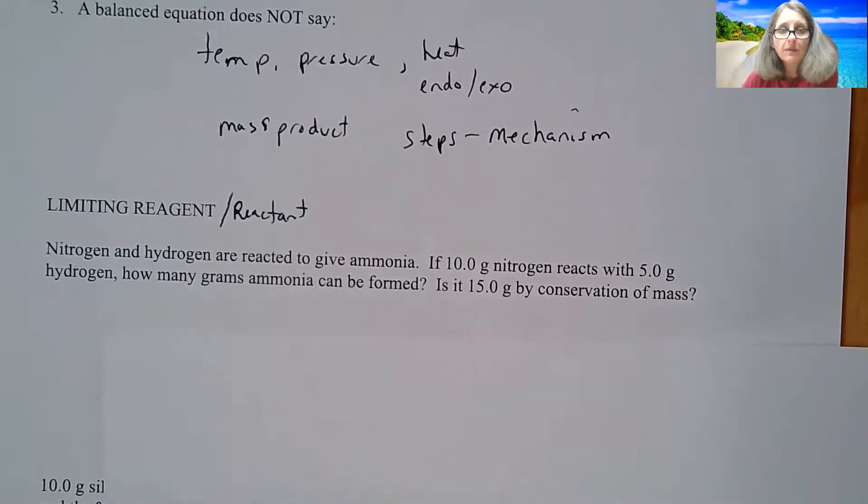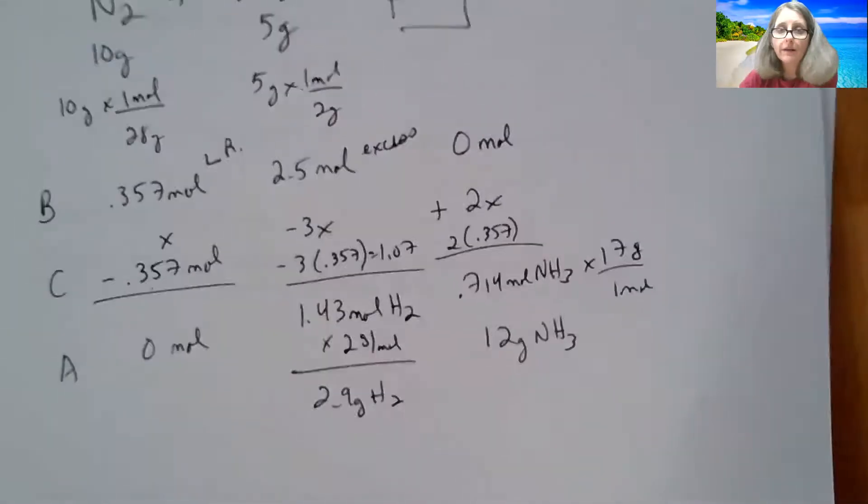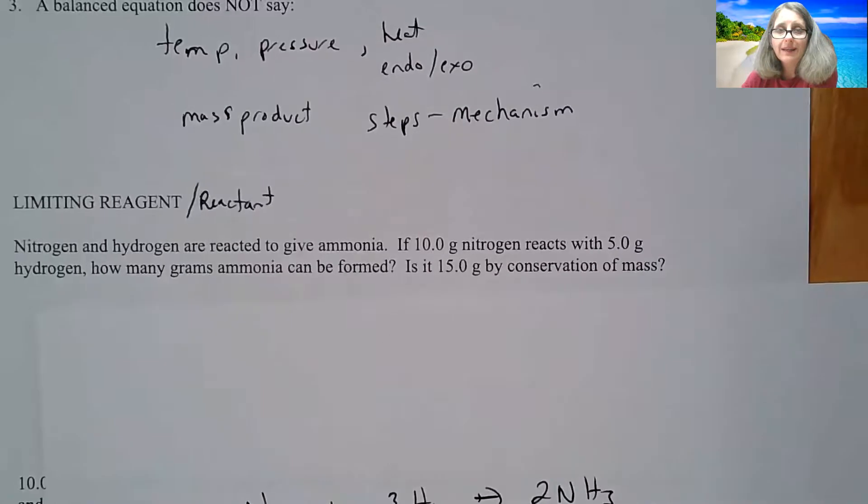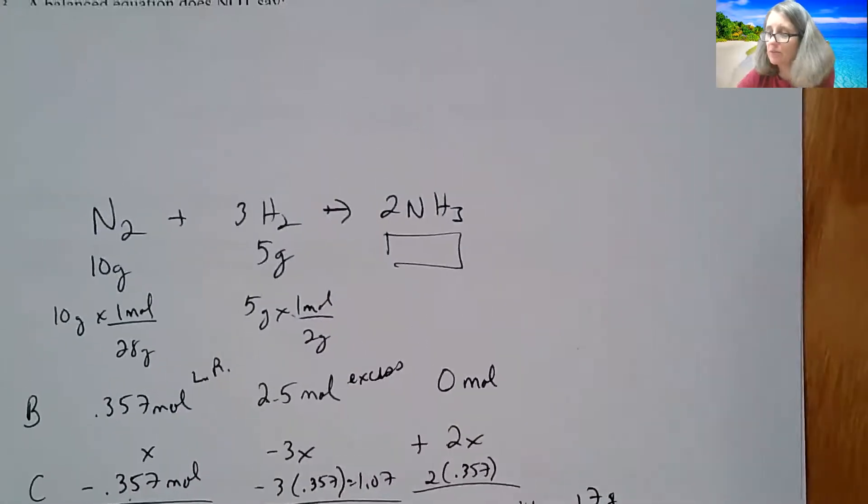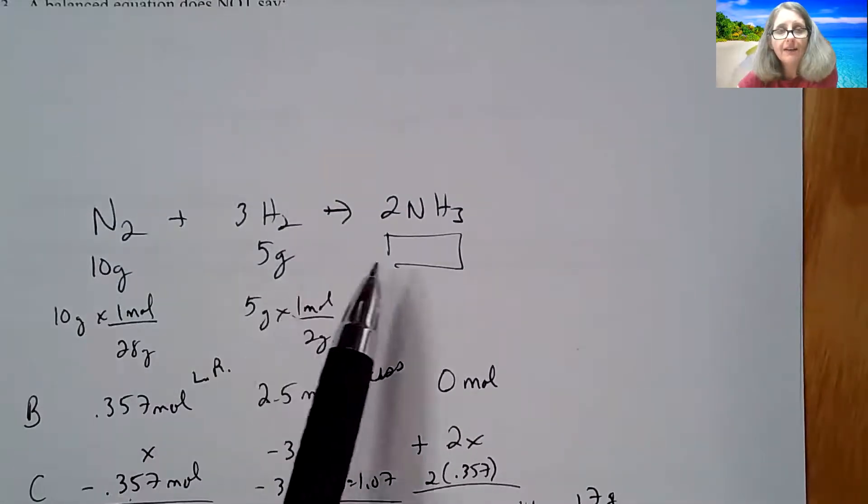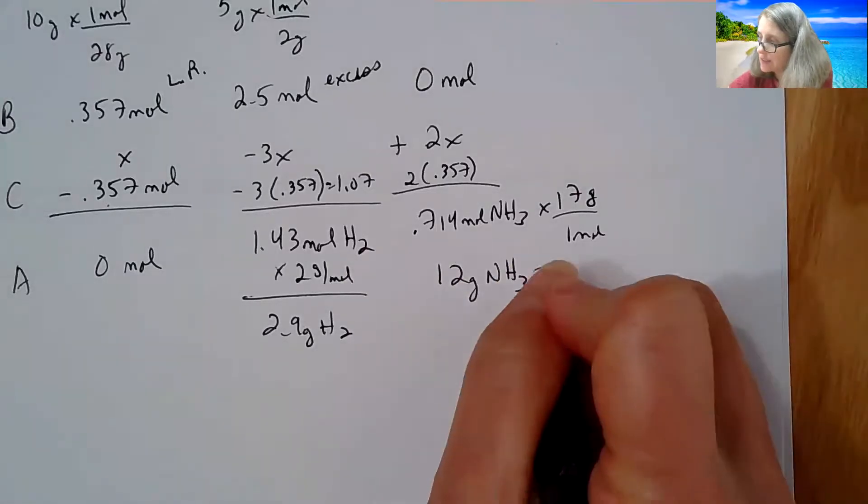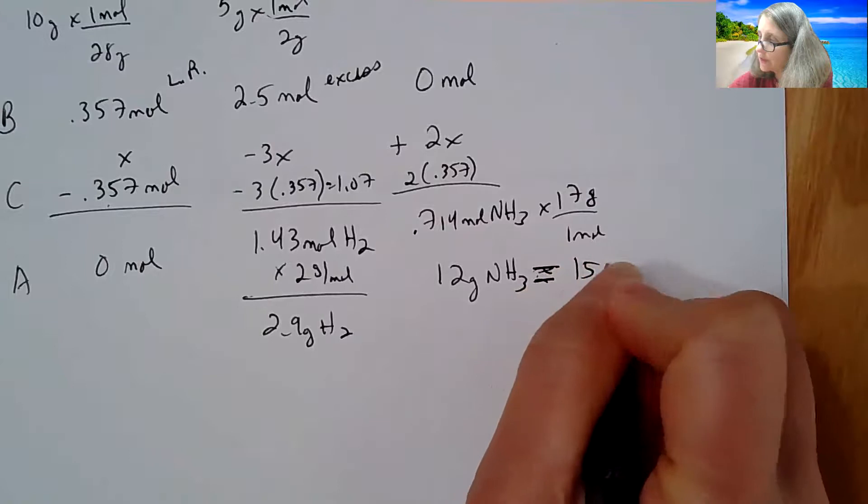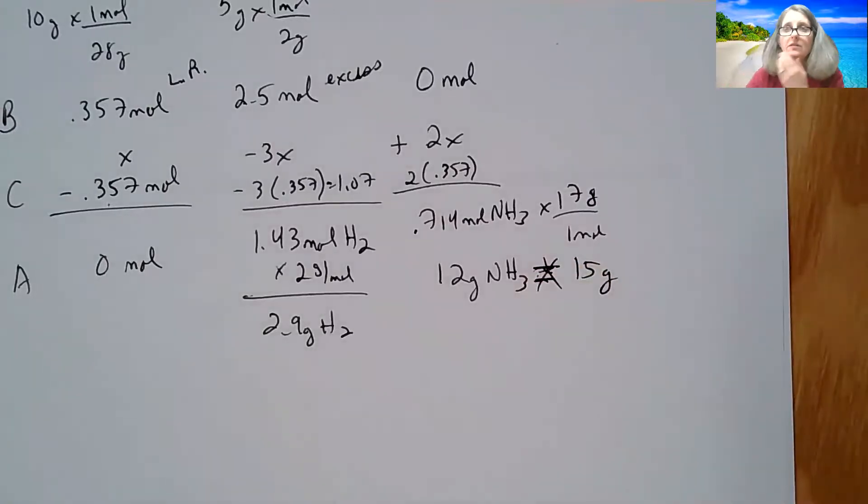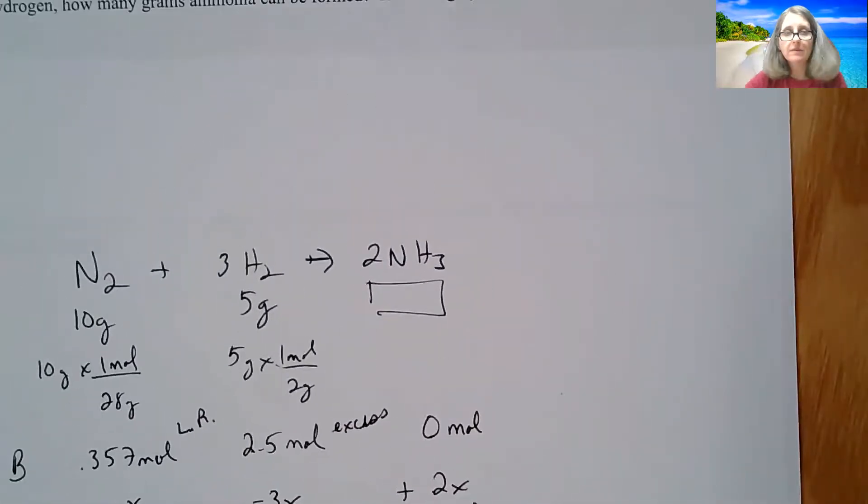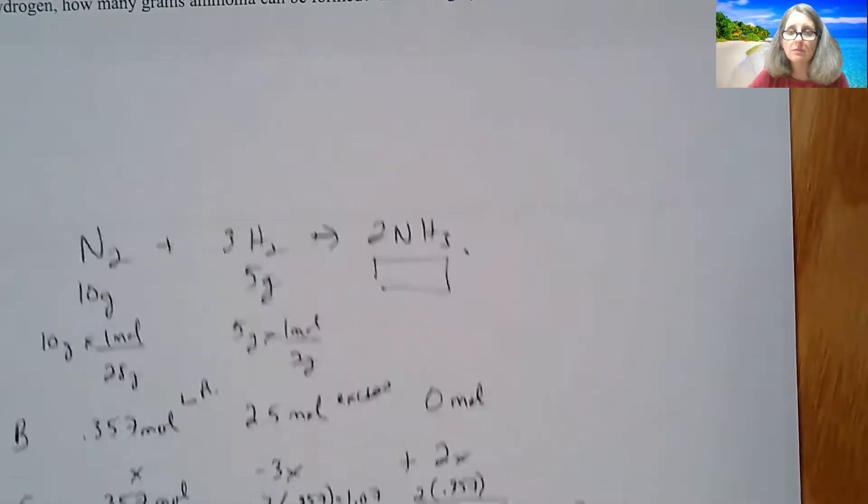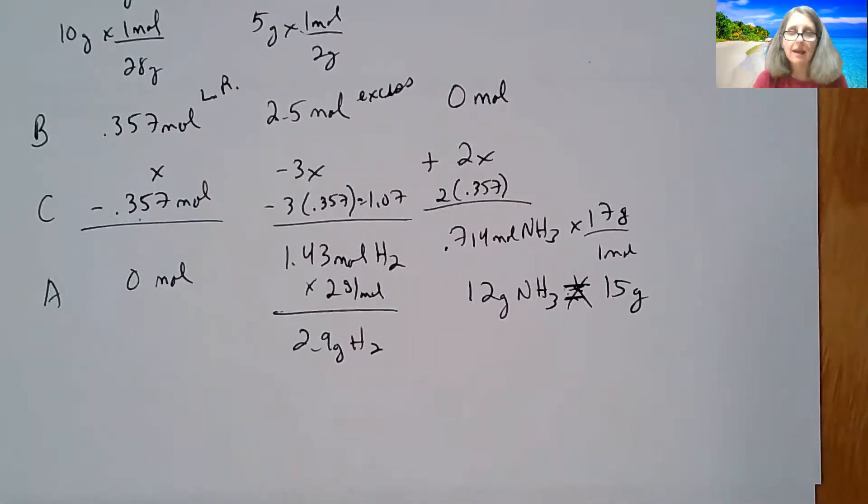So going back to the problem itself, it said how many grams can be formed? So we calculated 12. But it's also asking, isn't it 15? Because you started with 10 and you have 5, but realize the limiting reagent is telling you that not all of it's being used up. You had extra hydrogen. So this is not going to be equal to 15 grams. Law of conservation does hold because you have the same number of nitrogens and hydrogens on both sides. But grams doesn't have to be the same.